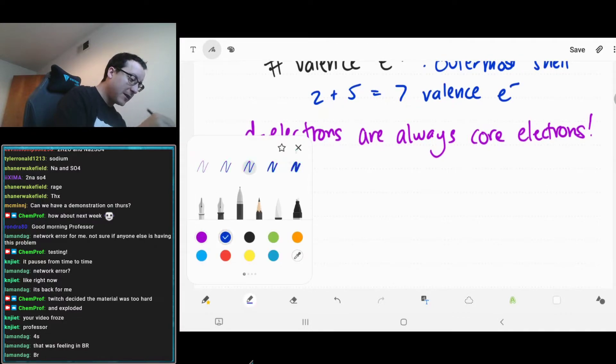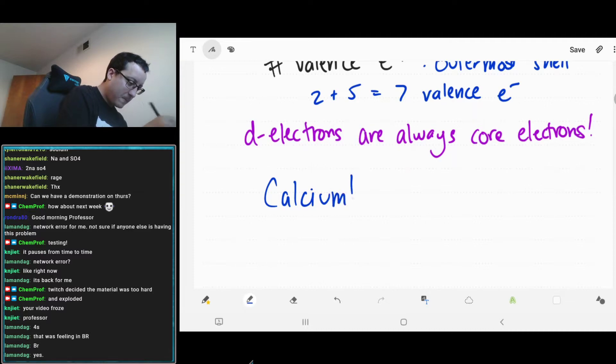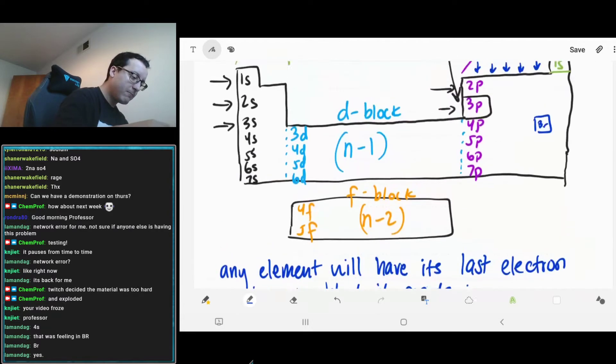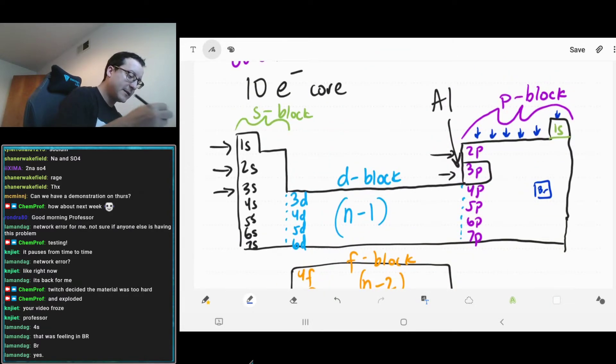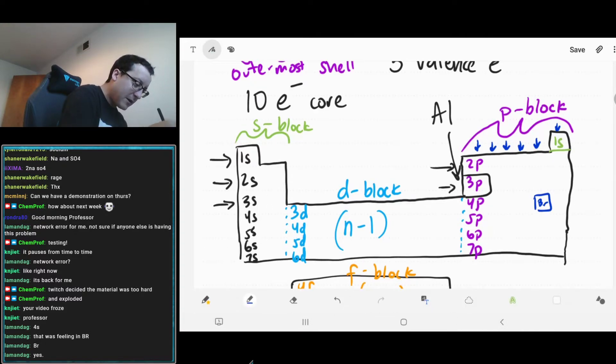So easy way to kind of figure this out, in case you forget that, you only are ever going to look at S and P subshells for your valence electrons. Because we're going to see that any time you have d electrons, those are not going to be part of the valence level. Because d is always going to be one level behind. Have your brains been destroyed yet? I hope so. They probably are. But that's the way it is. So, let's do an easier one. Let's do calcium.